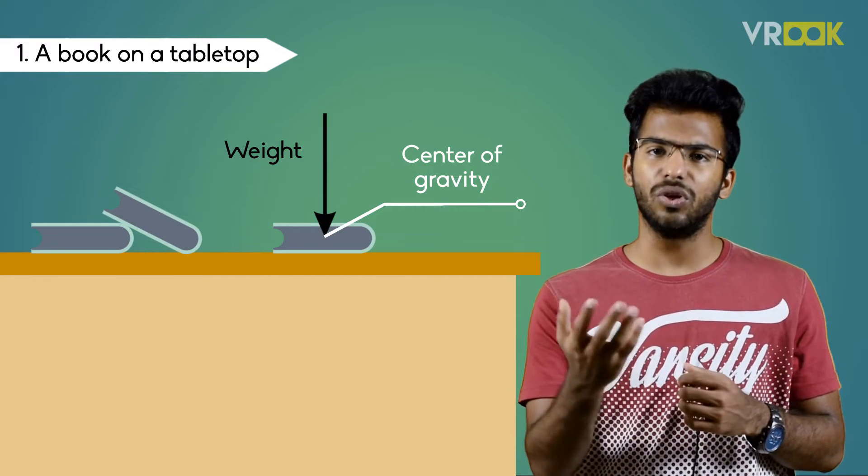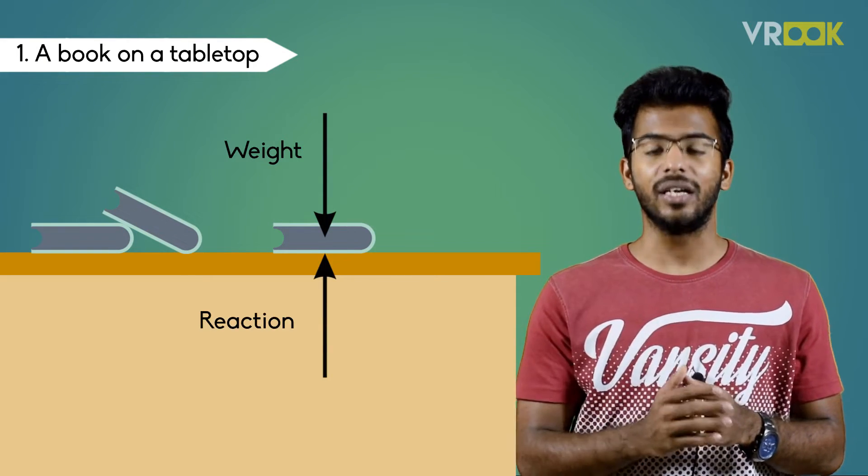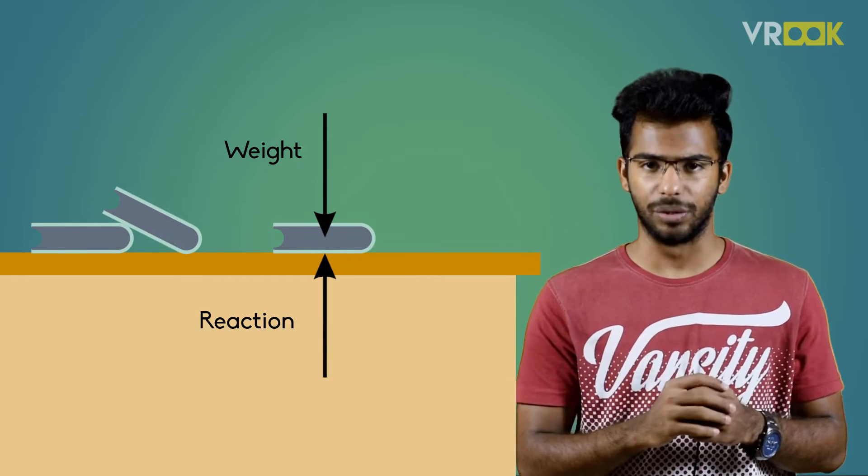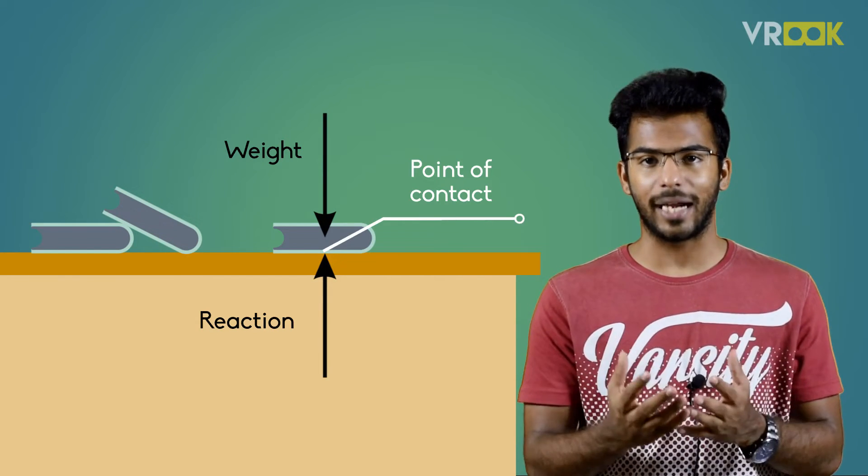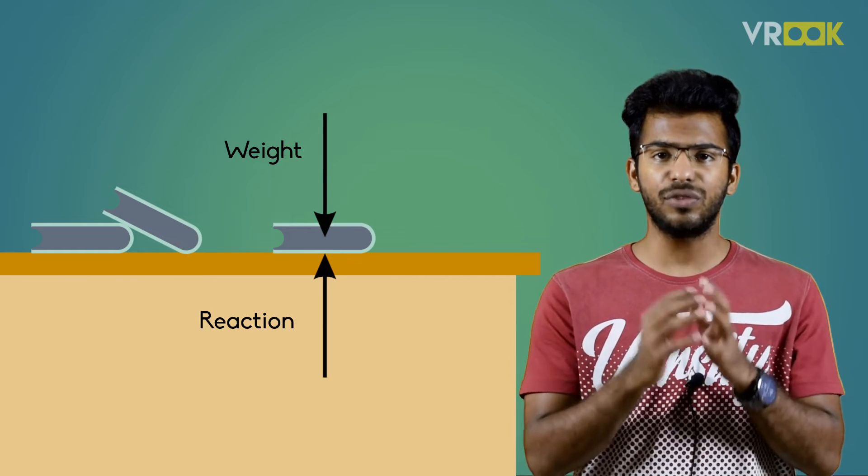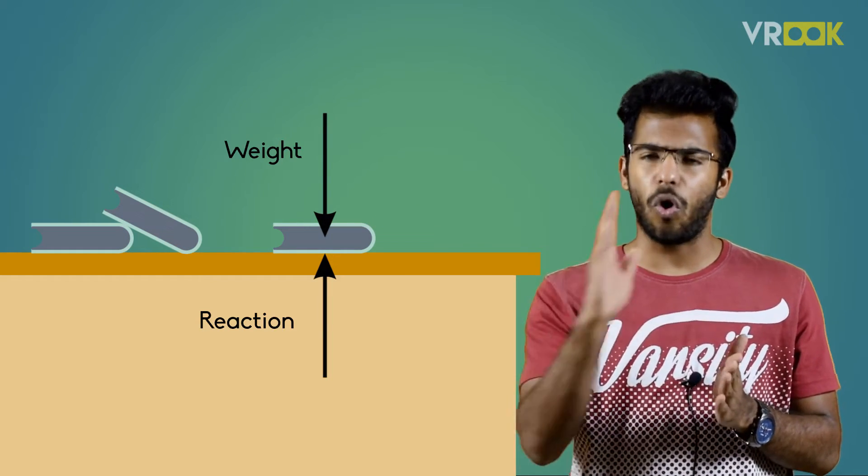As the book is resting on the table there will be a normal reaction to the weight in the upward direction to hold the book in that position. We should draw this force at the point of contact between book and the table and this force will be perpendicular to the plane always.